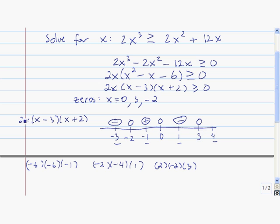And finally we use 4. 2 times 4 is 8. 4 minus 3 is 1. 4 plus 2 is 6. 8 times 1 times 6 is a positive number.